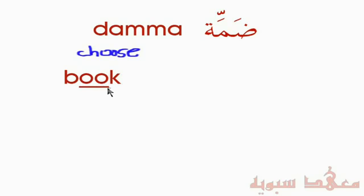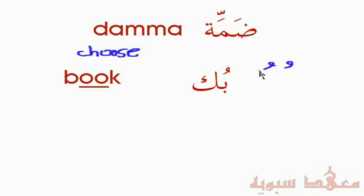To transliterate this in Arabic, we have the Ba with a Dhamma. You'll notice the Dhamma is written going like this — it doesn't matter if it curves one way or another, it's the same thing. That's just the script. So that's a Ba with a Dhamma. Notice when I say 'Dhamma' — some people say it with a Daad, saying 'Damma.' It's not 'Damma,' it's 'Dhamma.'